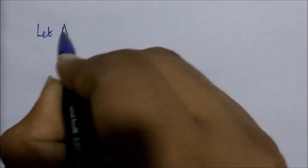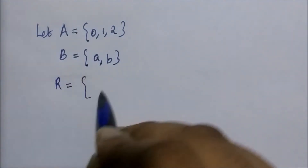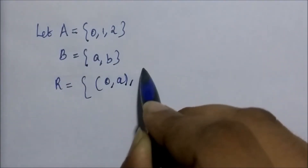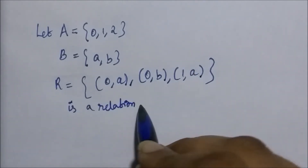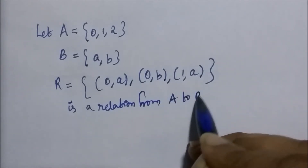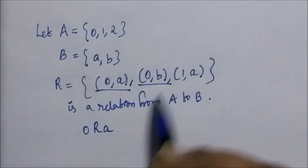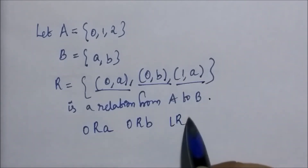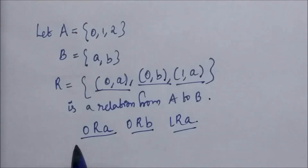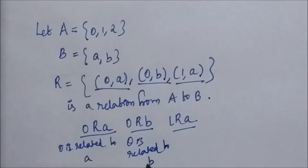Let's take one more example. Let set A equal to {0, 1, 2} and set B equal to {a, b}. Now R is defined as the set containing (0,a), (0,b), and (1,a). There are three elements in this relation. The pair (0,a) means 0 is related to a, written as 0 R a. Similarly, (0,b) means 0 is related to b, and (1,a) means 1 is related to a.